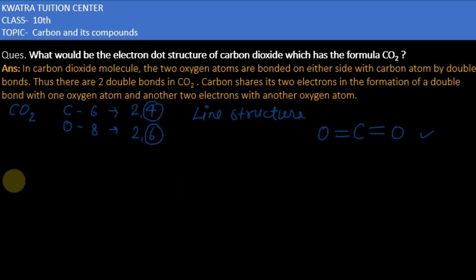Now come to electron dot structure. So carbon is here and I will represent electrons of carbon by dots. So there are 4 electrons present like this.